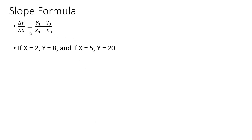A slope formula: slope is just change in y over change in x. Change in y is y-subscript-1 minus y-subscript-0. Change in x is x-subscript-1 minus x-subscript-0. For example, if x equals 2, y equals 8, and if x equals 5, y equals 20, we can calculate the slope between these points.